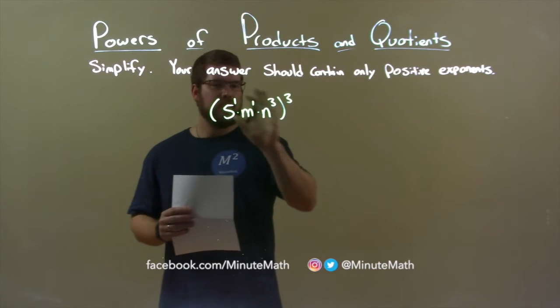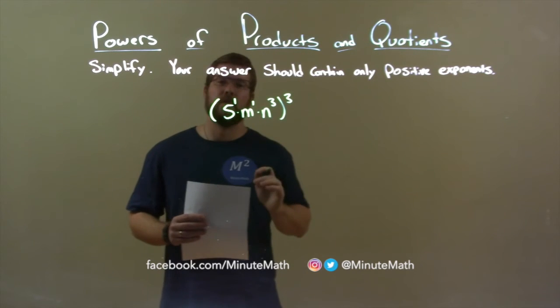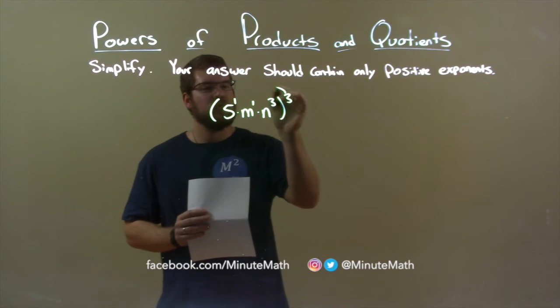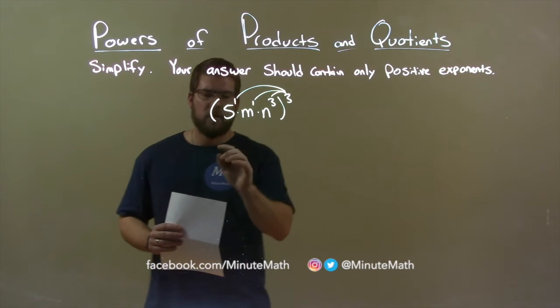To simplify this, since everything in parenthesis is raised to the third power, we take this third power, and it gets distributed to the exponents of the values inside the parenthesis.